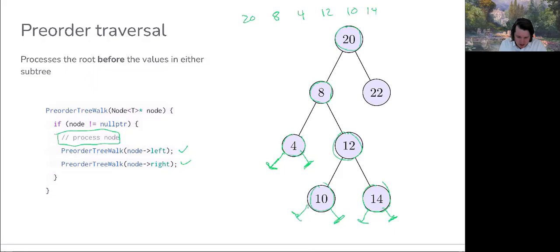And guess where we are now? We've already processed 14, we've already processed 12, we've already processed eight, and we're back up in the activation record for the root node. So it's been processed, we've processed the left, now we're going to process its right. So go ahead and move right.